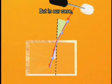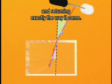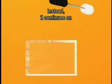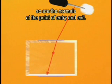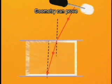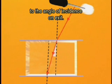But in our case, the light is not hitting a mirrored surface and returning exactly the way it came. Instead, it continues on to strike the opposite surface of the glass. Since the two glass surfaces are parallel to each other, so are the normals at the point of entry and exit. Geometry can prove that the angle of refraction on entry is equal to the angle of incidence on exit.